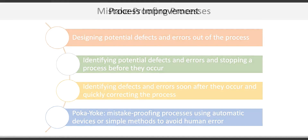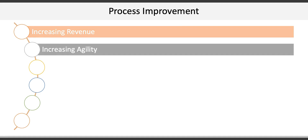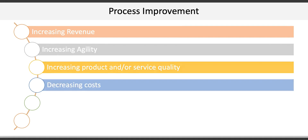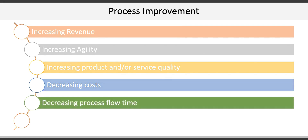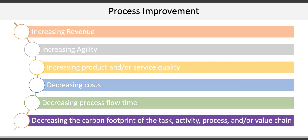The last concept in the chapter is a general discussion around process improvement. No process is inherently perfect from the beginning and can benefit from constant improvement. Process improvement generally focuses on one or more of six areas: increasing revenue, increasing agility, increasing product and/or service quality, decreasing costs, decreasing process flow time, or decreasing the carbon footprint of a task, activity, process, or value chain. As customers, we rarely take the time to appreciate how much work it takes to produce a product or create a service. Firms put great effort and investment into developing both simple and complex tasks, activities, and processes that turn raw materials into goods and ideas into services that make our lives better.